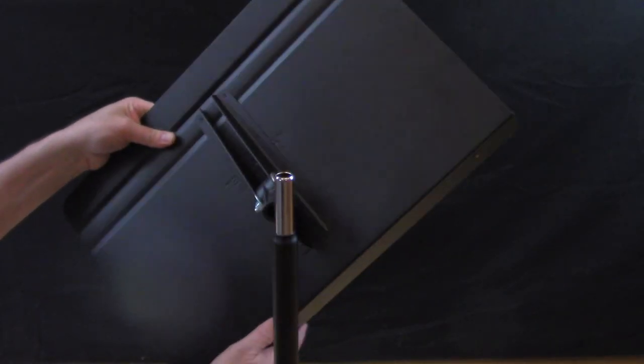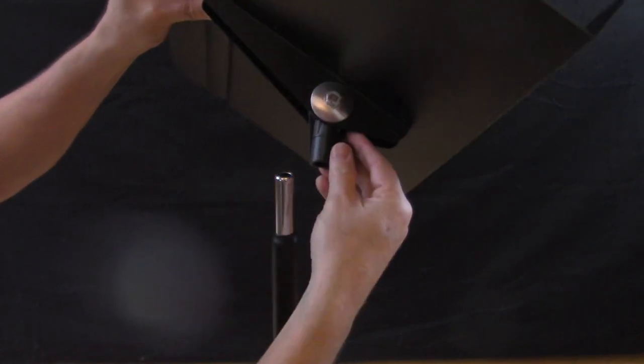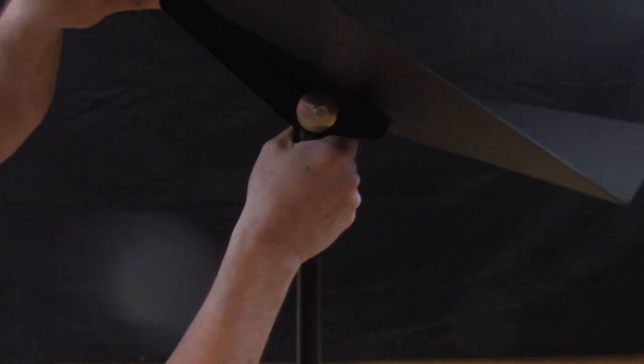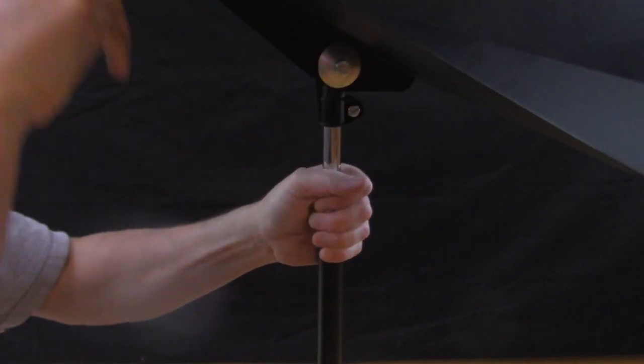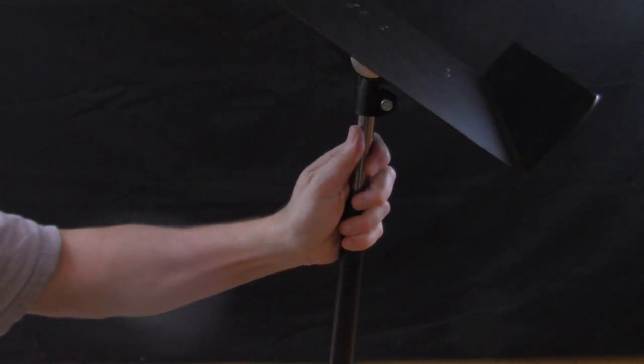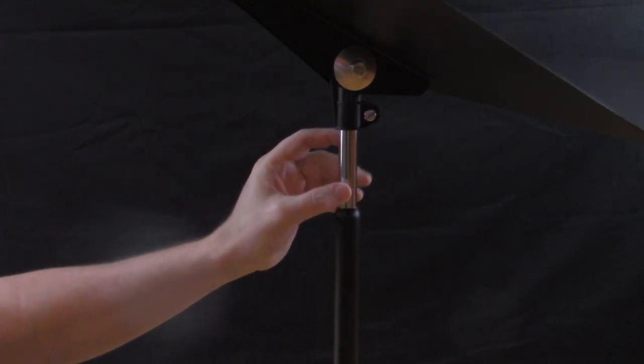The next step is to take the stand and bend this out a little bit, and then we're going to slide this onto the silver part. Press it down. And then we want to tighten this clamp around the silver part.